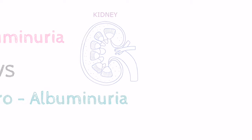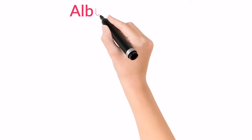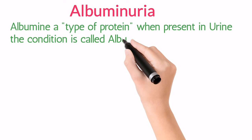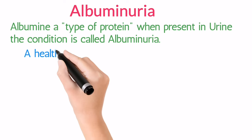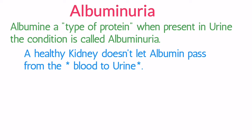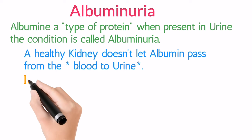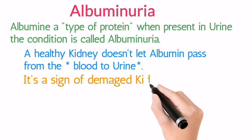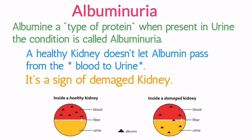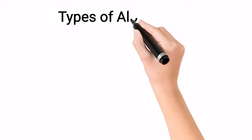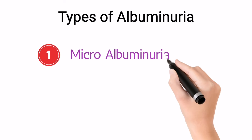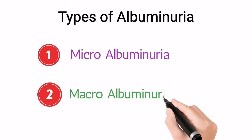Albuminuria is a condition in which albumin is present in urine. Normally, a healthy kidney doesn't let albumin pass into the urine from the blood. But if it is present, it's a sign of a damaged kidney. Albuminuria has two types: one is microalbuminuria and the second is macroalbuminuria.